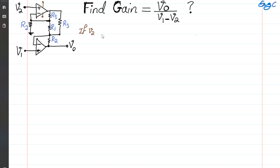If V2 is 0 — so we are shorting V2 — that means V2 is ground, so that terminal is 0. Therefore, since the virtual short between the two input terminals of the ideal op-amp is valid, that node also appears as 0. Since both sides of resistor R2 are at 0 volts, there is no current flowing through it, so there is 0 voltage between R3 and R1.